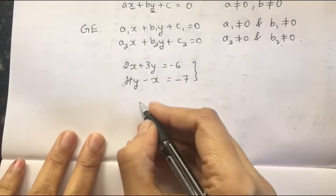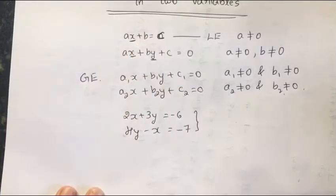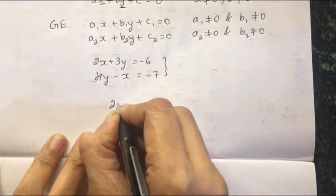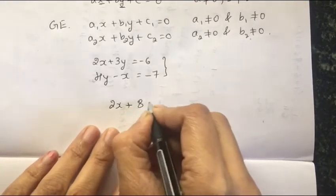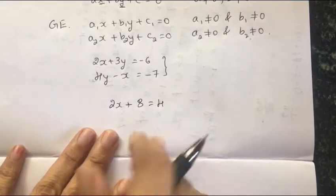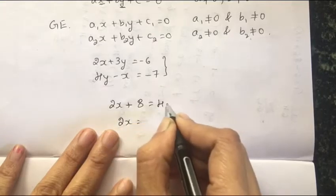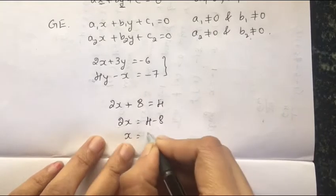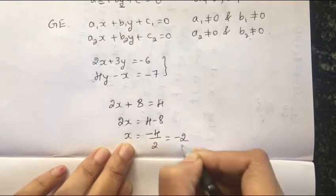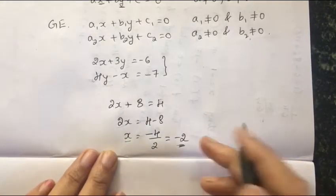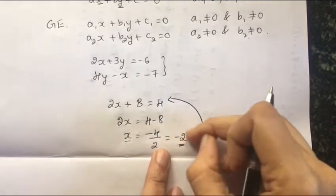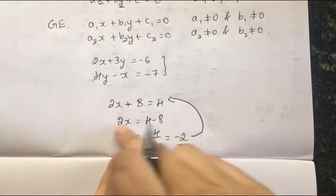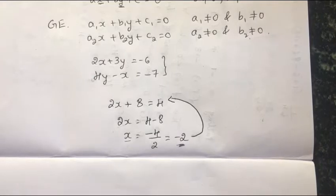Let me recall the solution of a linear equation with a single variable. Suppose I have 2x plus 8 equal to 4. Then 2x equals 4 minus 8, which gives x equal to minus 4 divided by 2, which is minus 2. This is the solution — when you substitute this value of x, the left-hand side equals the right-hand side.